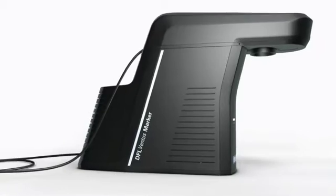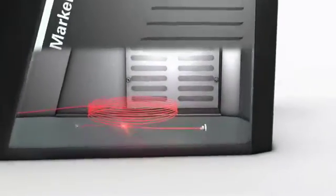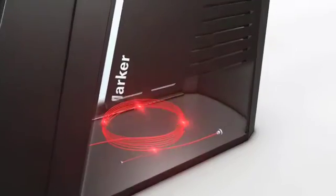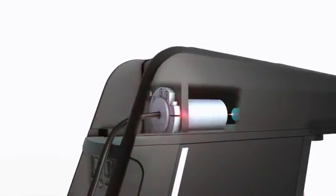Like all the other laser systems from ACI, the DFL Ventus marker can handle a wide variety of marking applications, including machine-readable codes, serial numbers, graphics and logos.